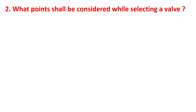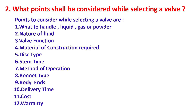What points shall be considered while selecting a valve? Points to consider while selecting a valve are: what to handle — liquid, gas, or powder; natural fluid; valve function; material construction required; disc type; stem type; method of operation; bonnet type; body; delivery time; cost; and warranty.